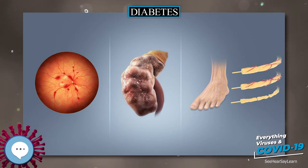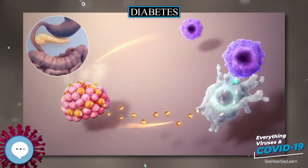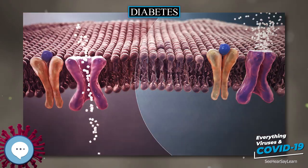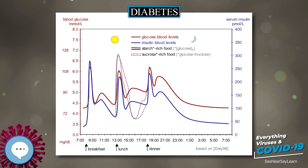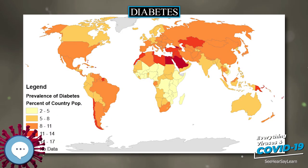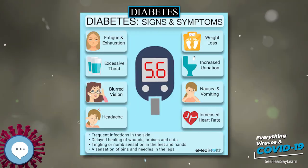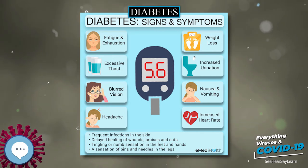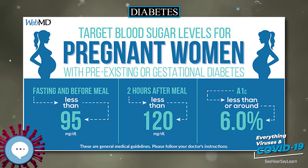Insulin is released into the blood by beta cells found in the islets of Langerhans in the pancreas, in response to rising levels of blood glucose, typically after eating. Insulin is used by about two-thirds of the body's cells to absorb glucose from the blood for use as fuel, for conversion to other needed molecules, or for storage. Lower glucose levels result in decreased insulin release from the beta cells and in the breakdown of glycogen to glucose. This process is mainly controlled by the hormone glucagon, which acts in the opposite manner to insulin.